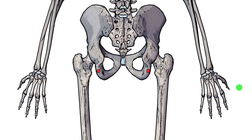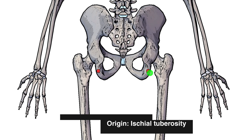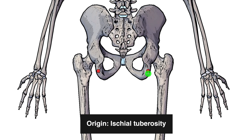Next you can see I've highlighted either side here in red the origin of the semimembranosus, which is going to be on the hip — specifically on the ischium, and to break it down even further, there's a raised bump in this red area called the ischial tuberosity.